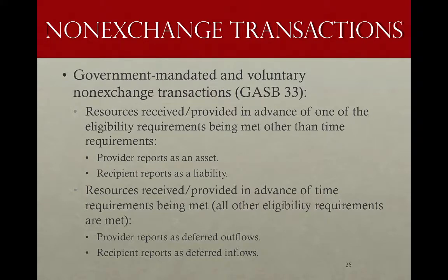Two other types of non-exchange transactions are government-mandated and voluntary non-exchange transactions — essentially intergovernmental grants. Statement 65 covers both sides of the transaction since governments may be both providers and recipients of grants. If resources are received or provided in advance of an eligibility requirement being met — other than time requirements — the provider should report an asset and the recipient should report a liability.